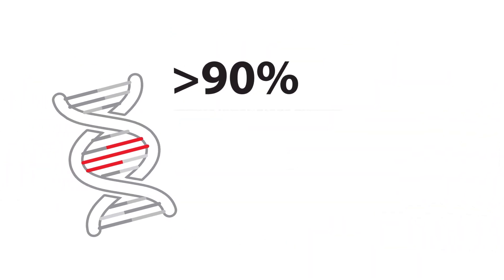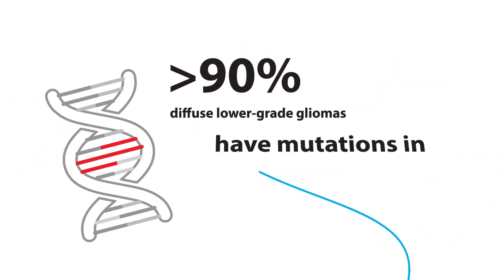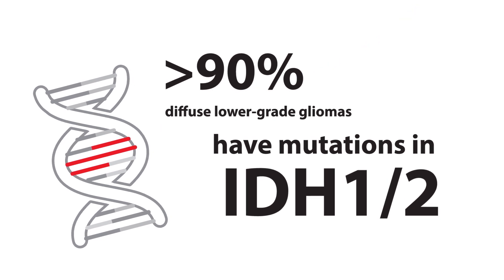More than 90% of adult-diffuse lower-grade gliomas have mutations in genes called IDH1 and IDH2.